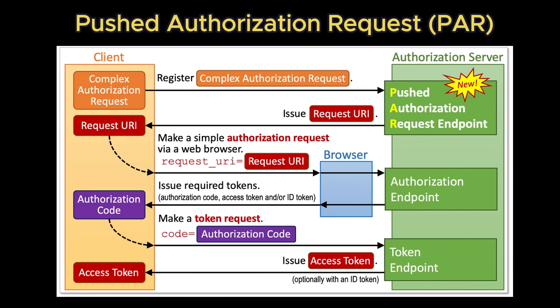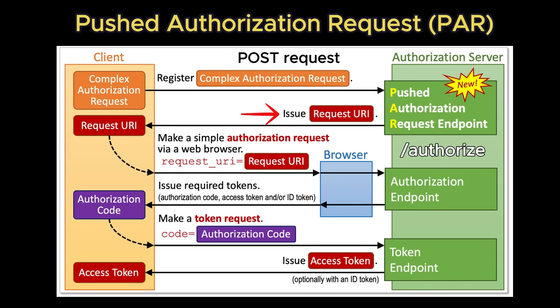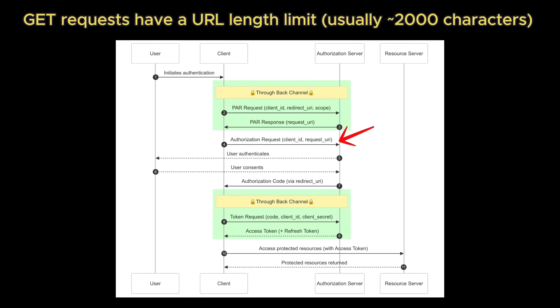That's why Pushed Authorization Requests, or PAR, was introduced — defined in RFC 9126. PAR solves these problems by moving the authorization request from the front channel to the back channel. The client application first makes a direct secure back-channel POST request to a new PAR endpoint on the authorization server. This request contains all the authorization parameters. The server validates the parameters, stores them, and returns a request URI — a short-lived reference — and its expiry time. The client then sends the user's browser to the /authorize endpoint with only the client ID and the new request URI. No sensitive parameters are ever in the browser's URL, and it also avoids errors from overly long URLs.